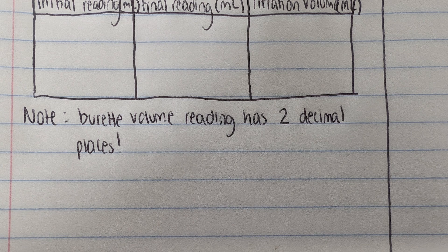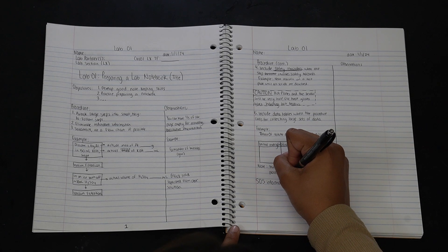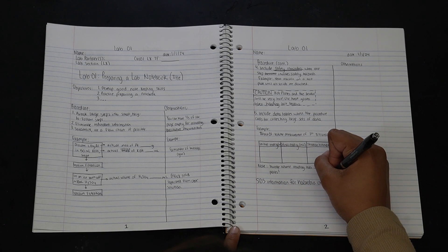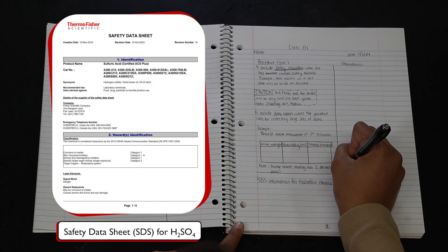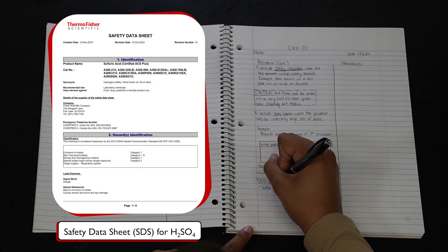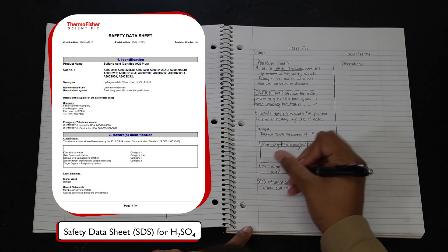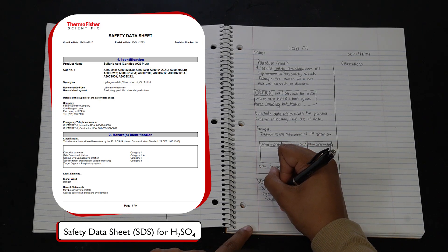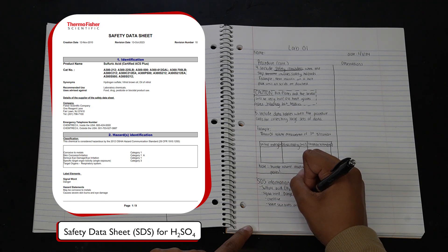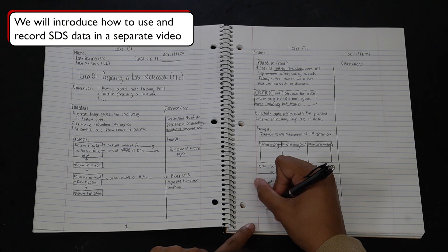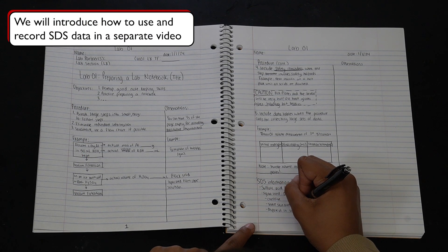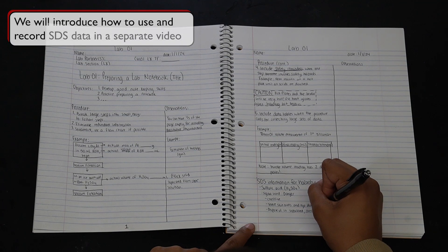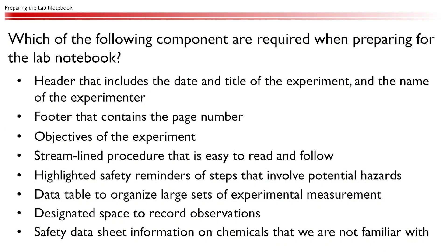After the procedure, the last section of the lab notebook is the safety data sheet information, the information on chemicals, or the SDS information. SDS information is required for labs that involve hazardous chemicals that we are not familiar with. We will discuss how to record SDS information in a separate video when needed. Which of the following components are required when preparing for the lab notebook?